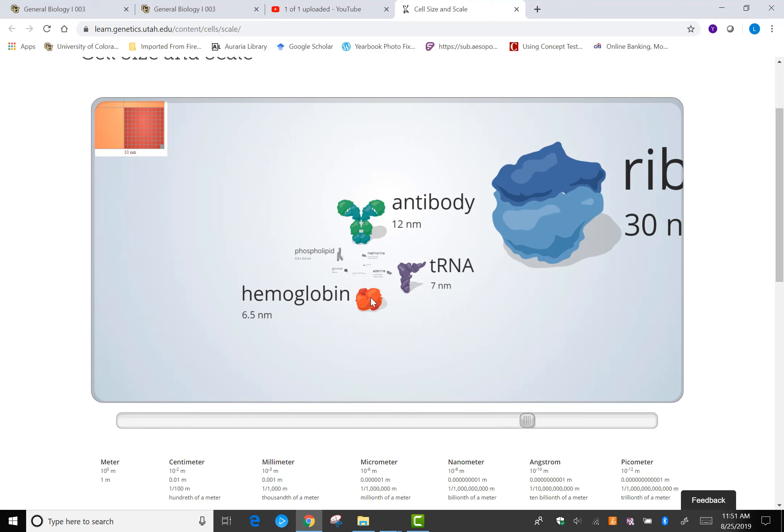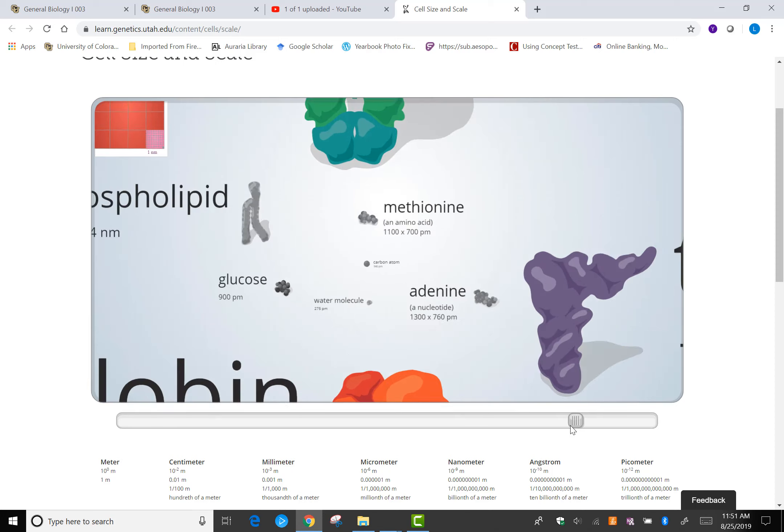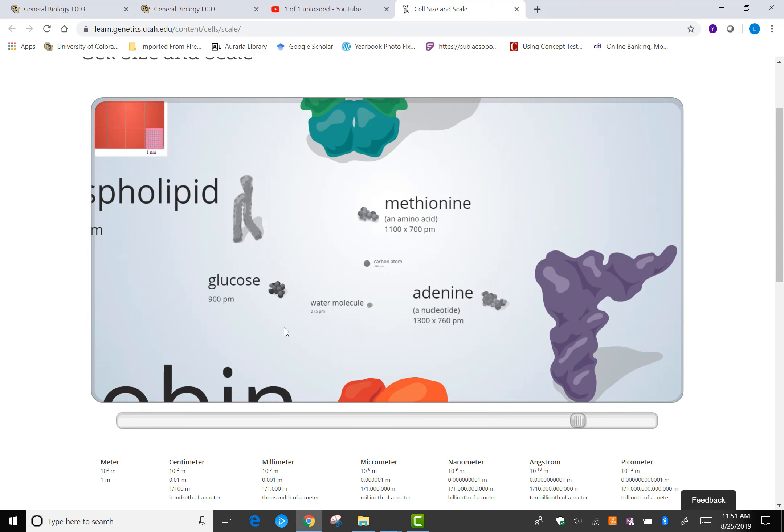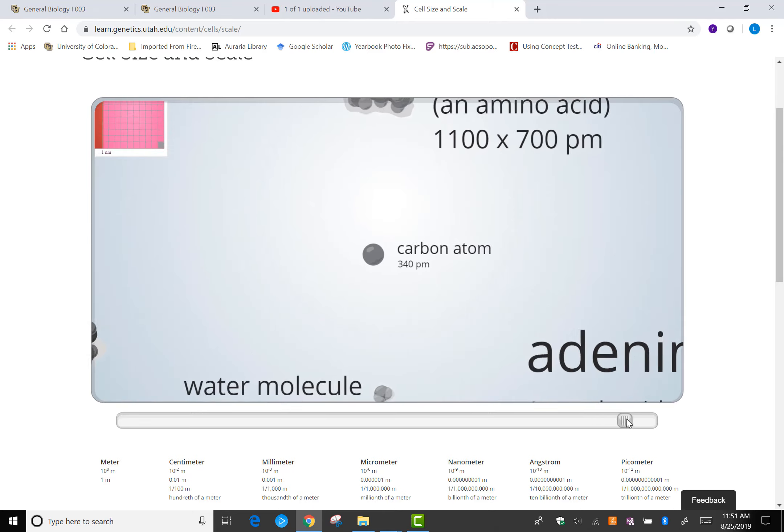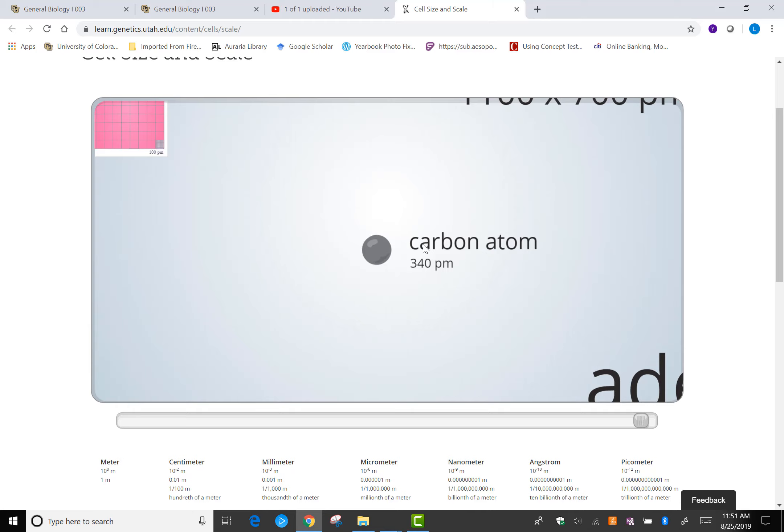Molecules such as hemoglobin, tRNA antibodies, or phospholipids, sugar, ATP, and down to a molecule.